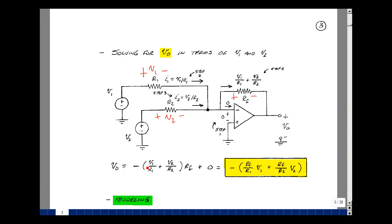Vout equals minus the quantity V1 over R1 plus V2 over R2 times the resistor Rf plus a drop of zero. Bring Rf inside, and I've got minus the quantity Rf over R1 times V1 and Rf over R2 times V2. So I have a summation of my amplifier voltages times the scale factor, and then that sum is inverted.